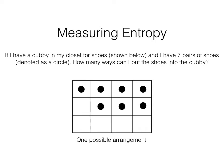If I have a cubby in my closet for shoes — think just a cube organizer — and I have seven pairs of shoes, the question becomes: how many ways can I put the shoes into this cubby? One way is that I put the shoes filling up the top row of cubbies and then starting on the second row until I run out of shoes. That is one possible orientation of my shoes within the cubby.